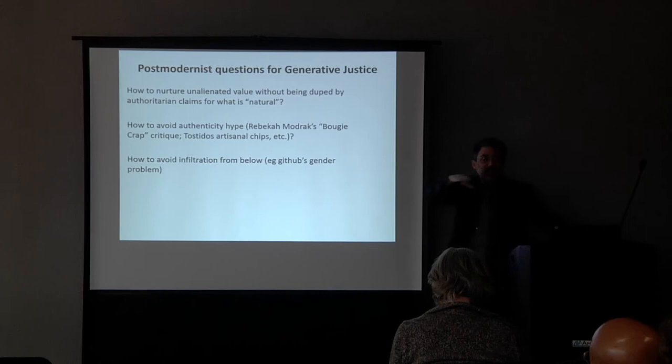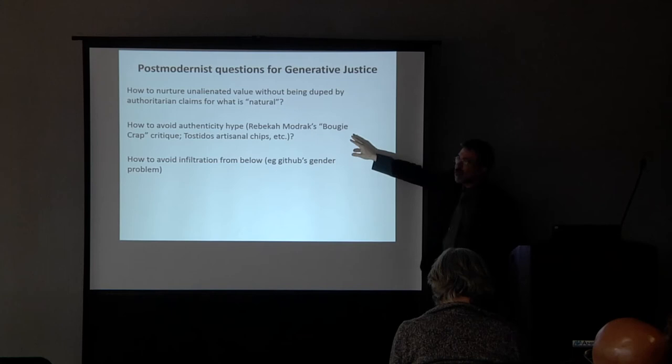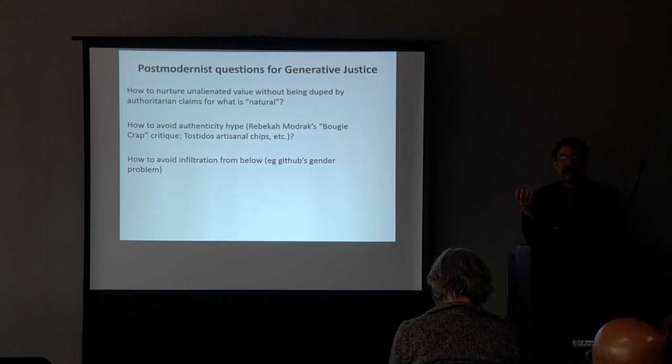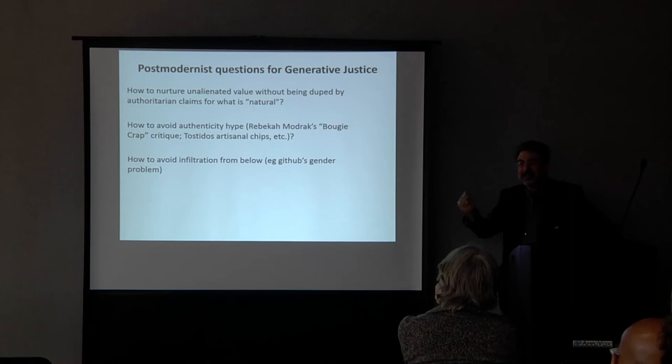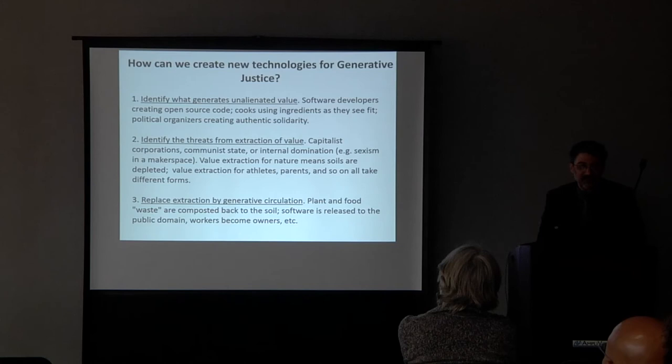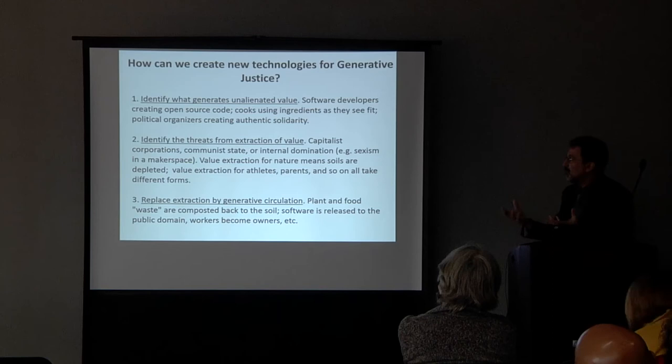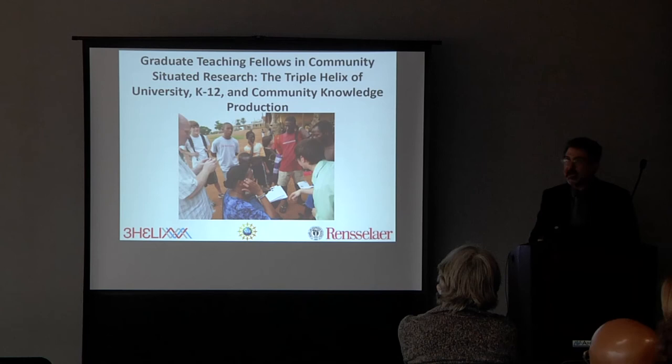I was so excited that Rebecca's here today — her 'bougie crap' essay, if you haven't read it, is just mind-blowing. It finally gave me a sense of how to do a critique of fake authenticity. If I'm so interested in unalienated labor, how do I take into account that Tostitos now makes an artisanal chip? Or I look at my cookie package and it says it's made by Keebler elves, with a picture of their workshop, but they don't exist. So we have the challenge of how to actually implement this as a system.